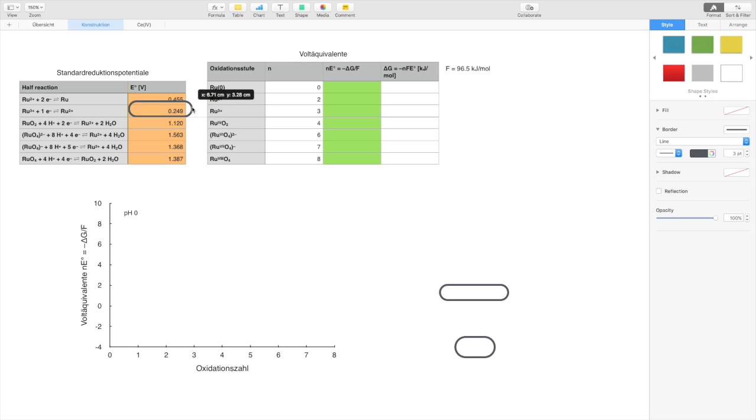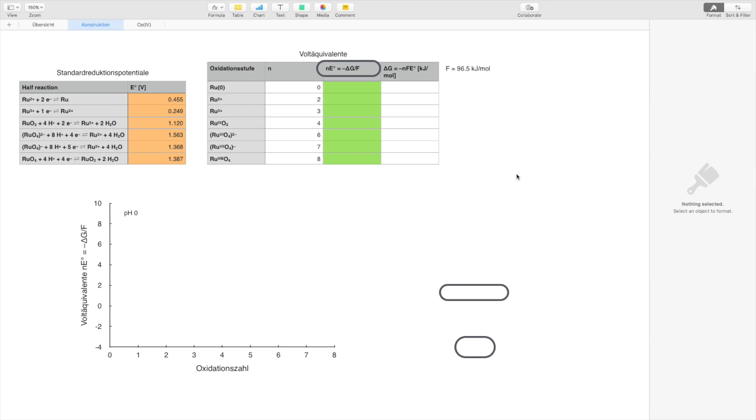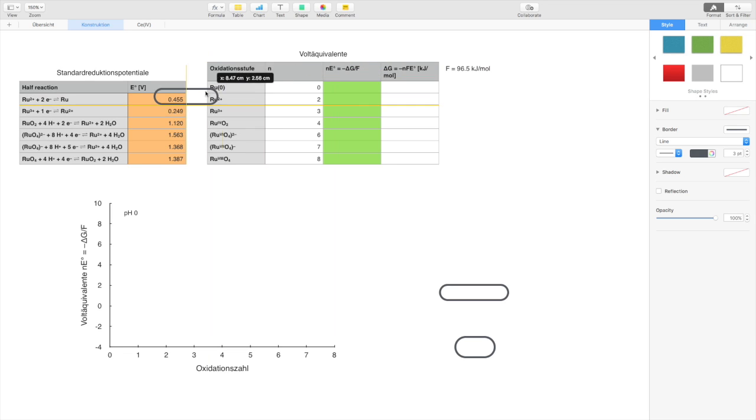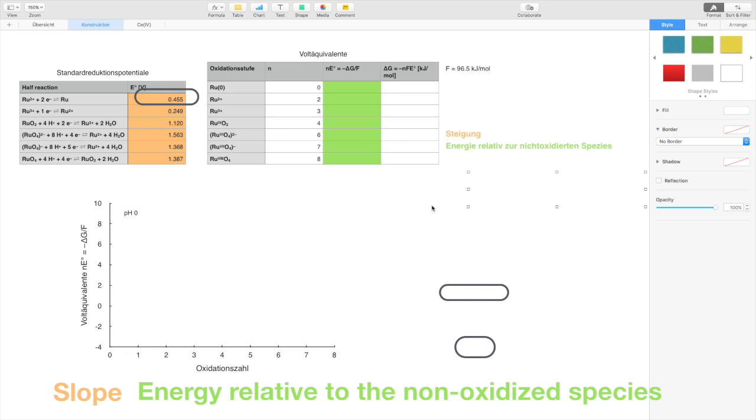Now you can calculate the free enthalpy of each species relative to each other, the so-called n times E°. The oxidation state zero always has the energy zero. You need the reduction potential between ruthenium 0 and ruthenium 2 to calculate the energy level of ruthenium 2.